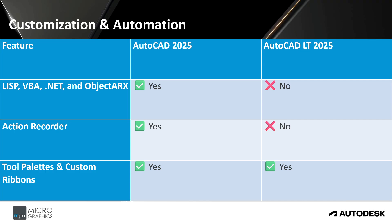For customization and automation, AutoCAD 2025 supports LISP, VBA, .NET, and ObjectARX, whereas AutoCAD LT cannot use those. The action recorder is available in the full version but not in AutoCAD LT. Tool palettes and custom ribbons are available in both.